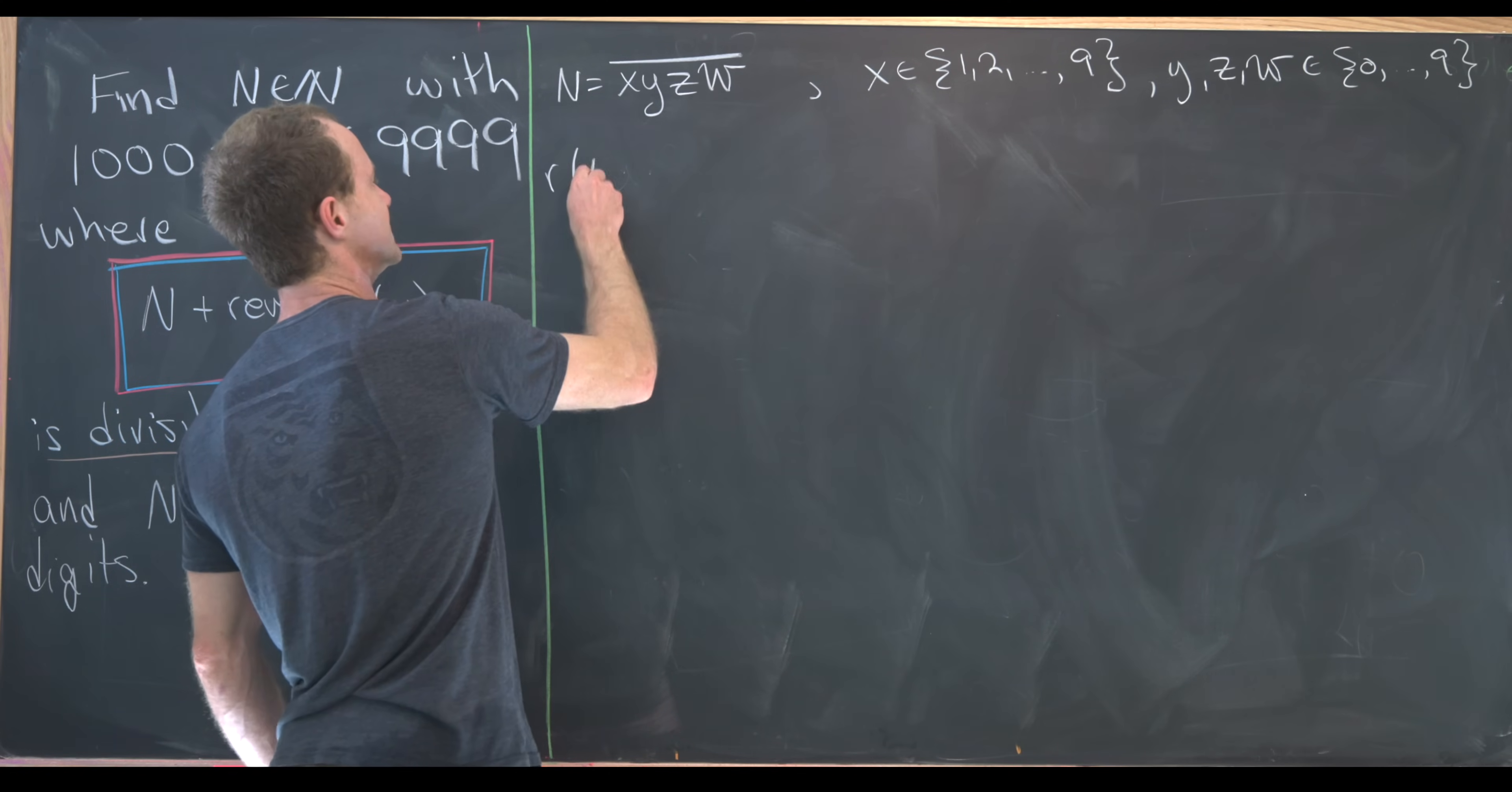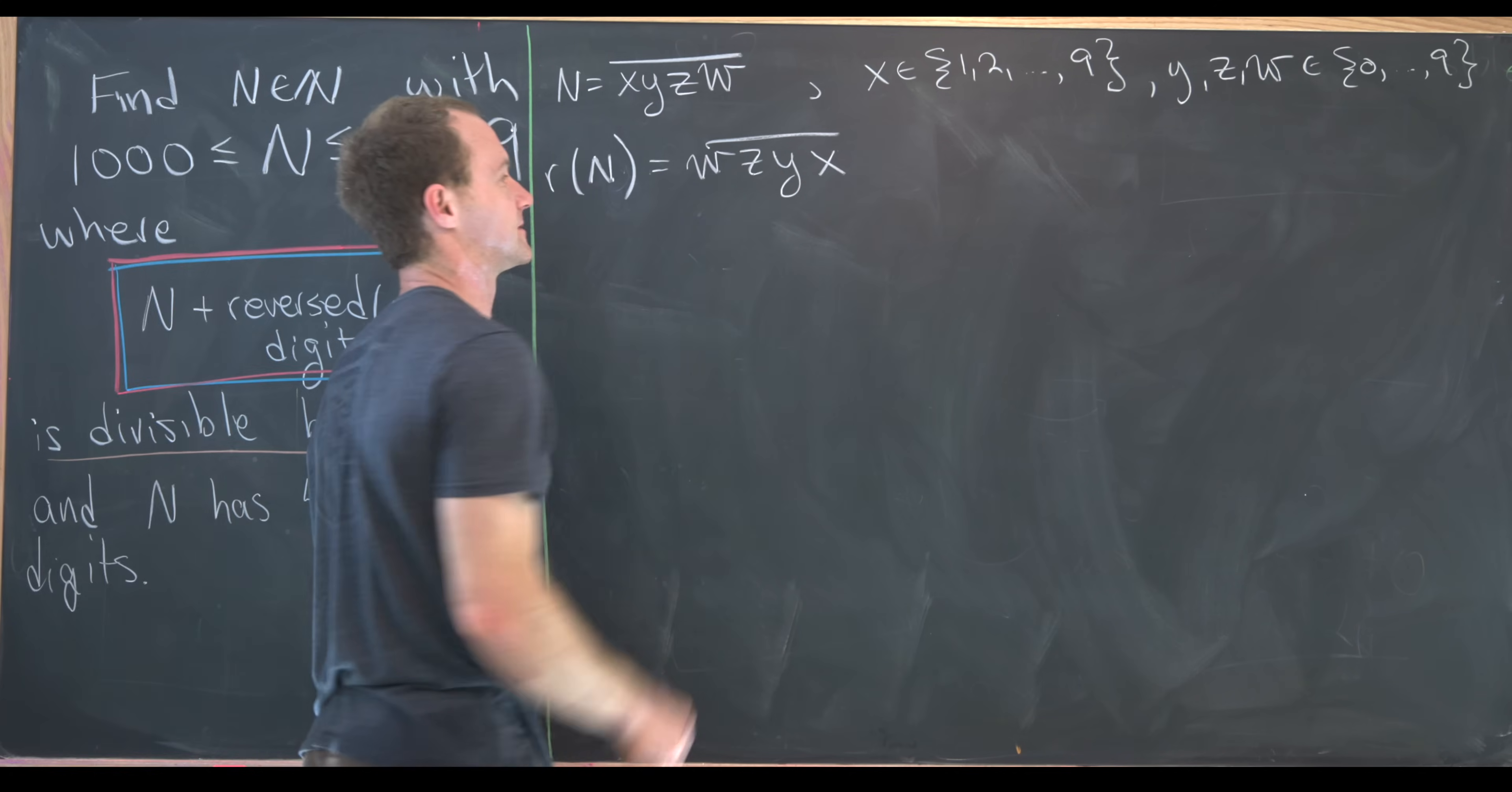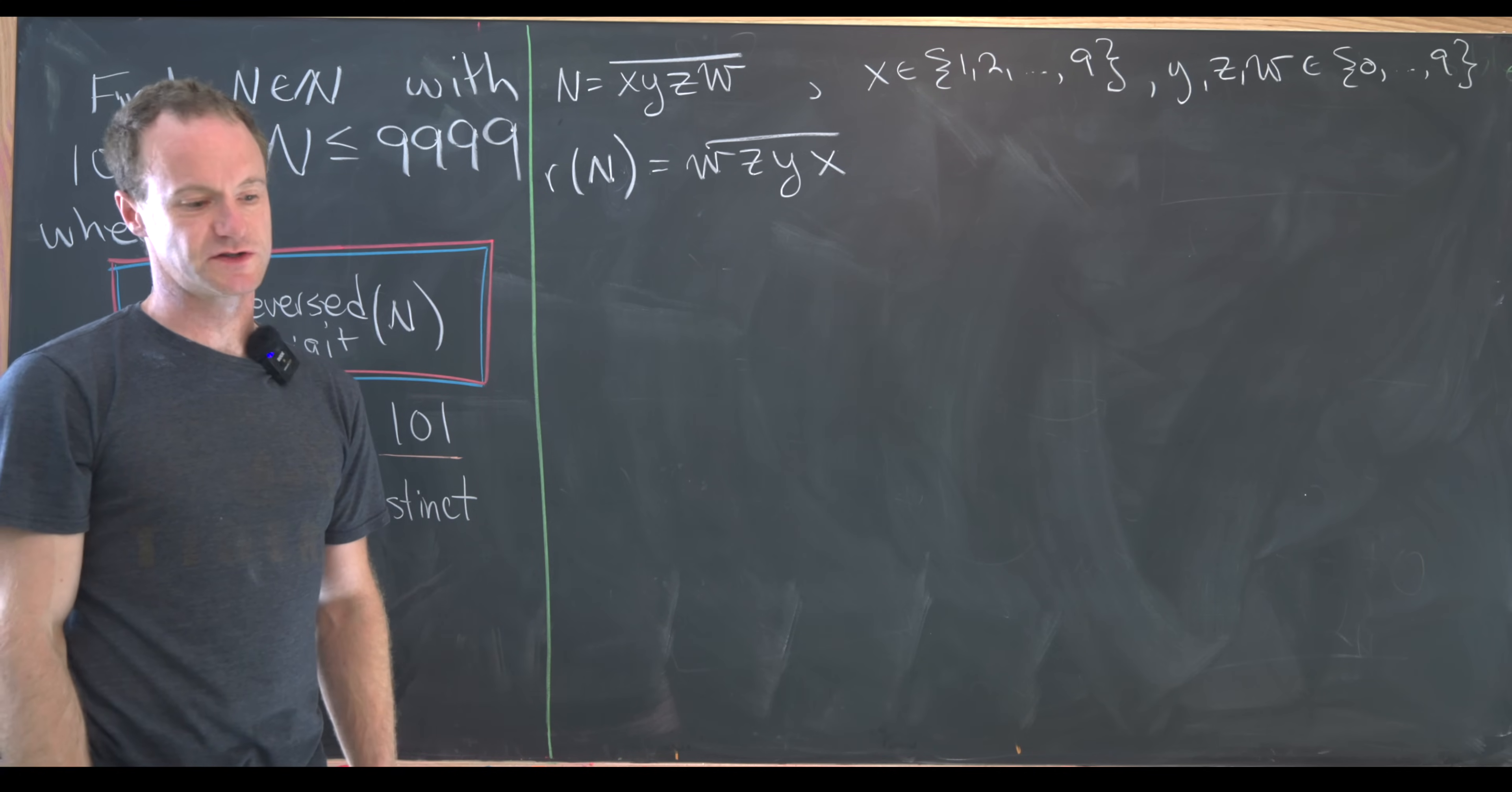But then the reversed digit version of N, which I'll just call R of N in this case, will be equal to W, Z, Y, X. And now we want N plus reverse digit of N to be divisible by 101. So in other words, it needs to be a multiple of 101.